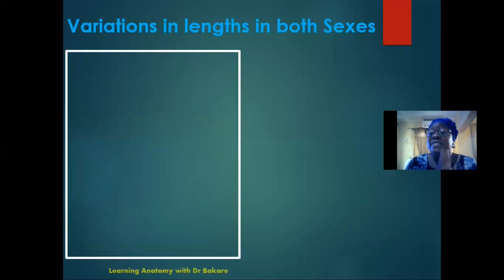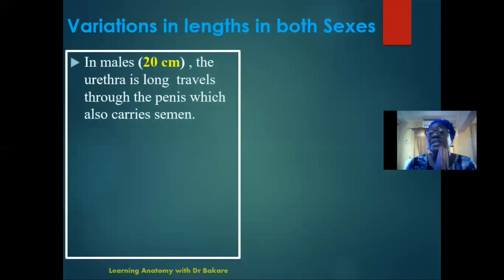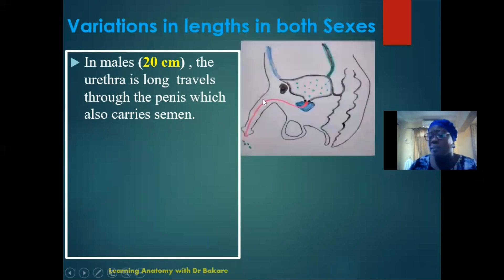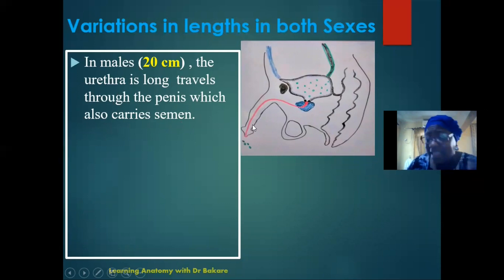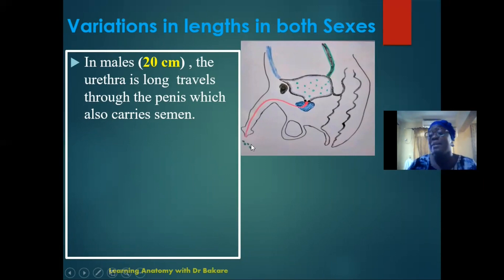Talking about the urethra, there is variation in the length of the urethra in both male and female, and that is understandable because of the length of the penis. In males, it is about 20 cm in length, because it needs to travel through the entire length of the penis. You can see it running through the prostate gland, and then it also runs through the entire length of the penis — no matter how long the penis is, the urethra is still going to run through it before urine can be released into the external environment. This makes the length of the urethra about 20 cm in males.